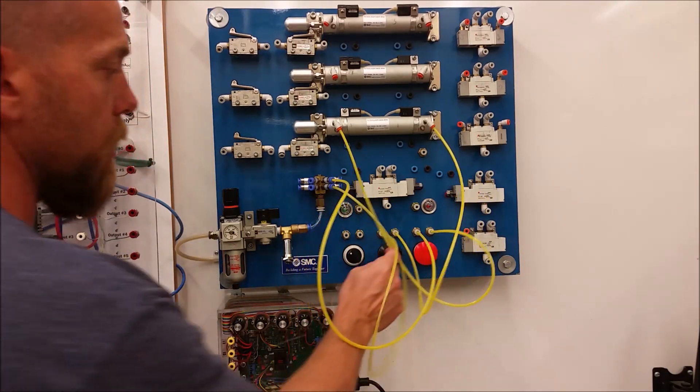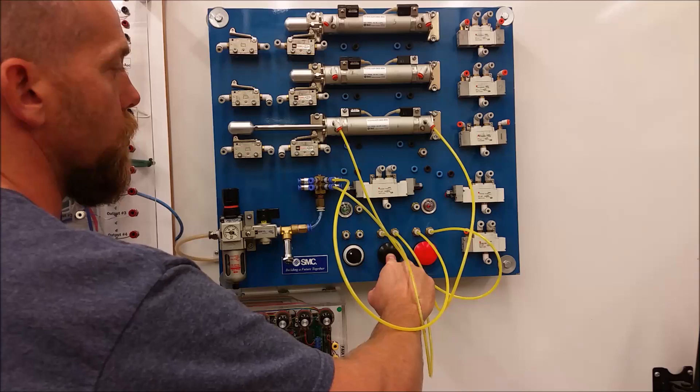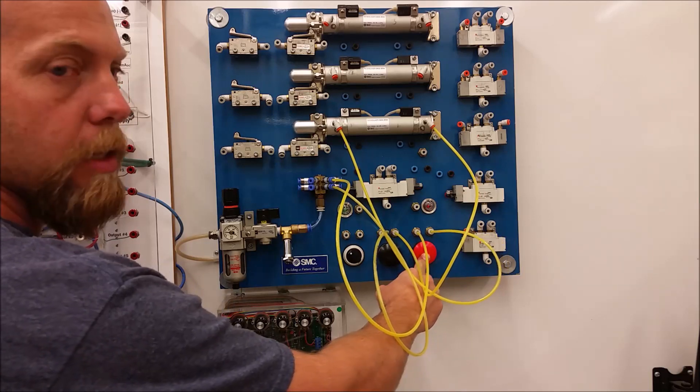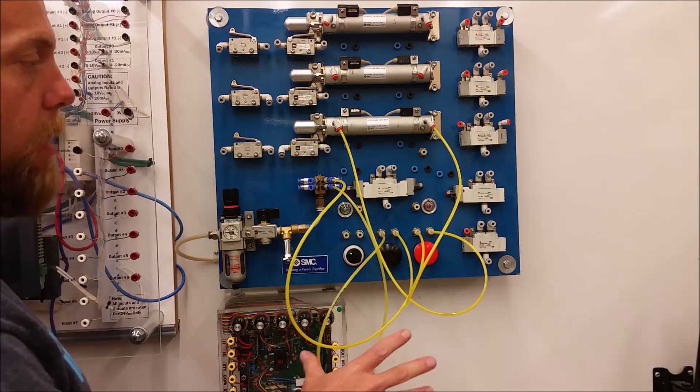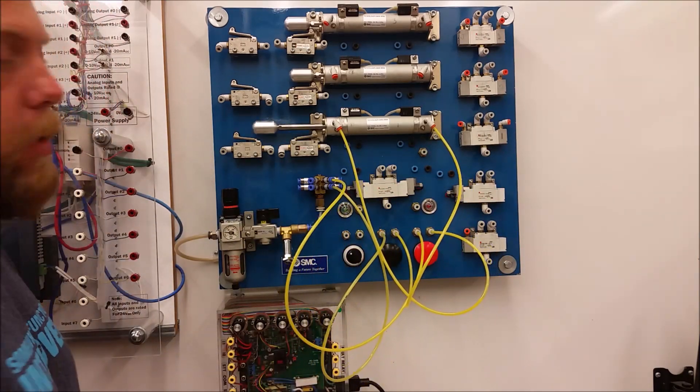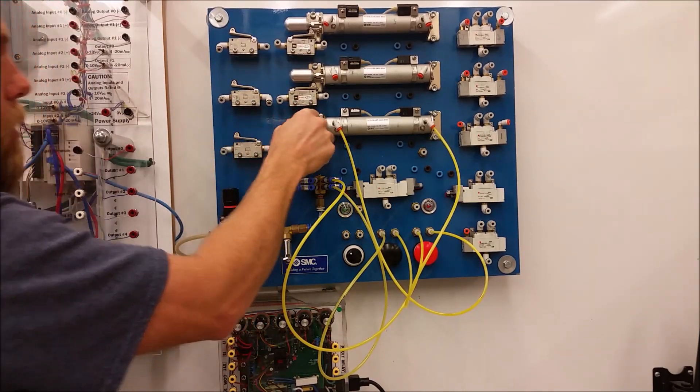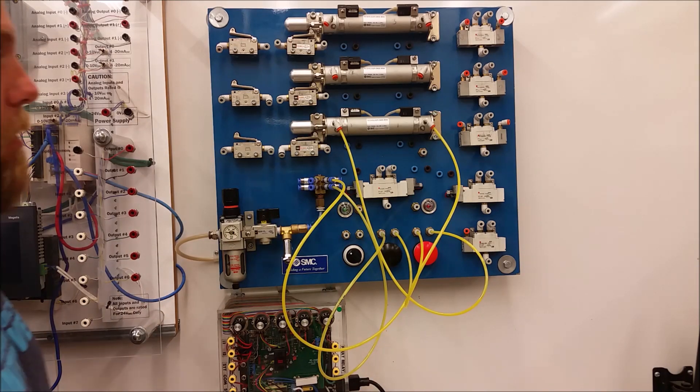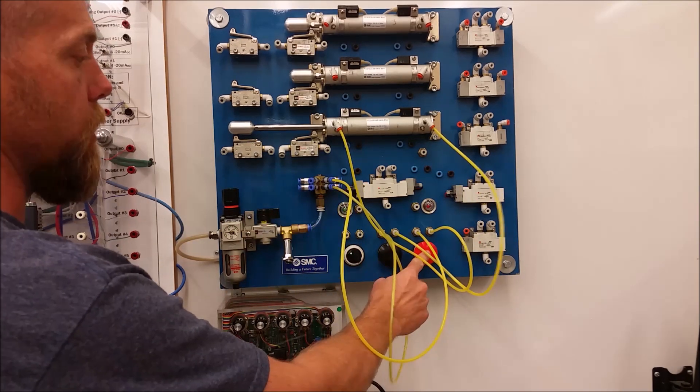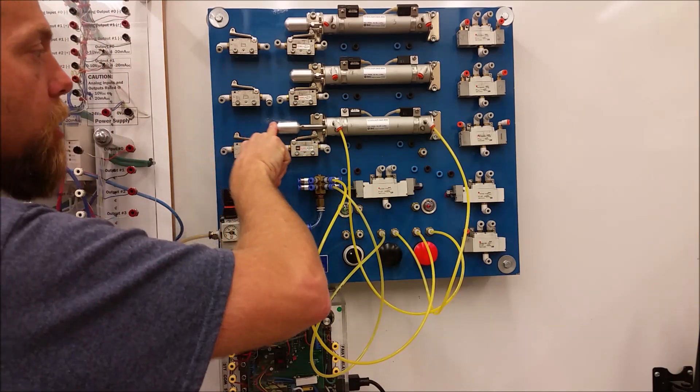One thing to notice though is that if I just tap this guy, it doesn't go all the way. I have to keep pushing this in order for it to extend all the way. If I hit this guy, it only goes halfway. I have to keep pressing it to retract. So there's a better way to do this. We can incorporate one of these 5-2s. And then as soon as I trigger the push button, then it's going to go to that position. You can see here that I can move this double-action cylinder wherever I want. Once we make use of the 5-2, then it will be maintained so that I just have to tap the push button.